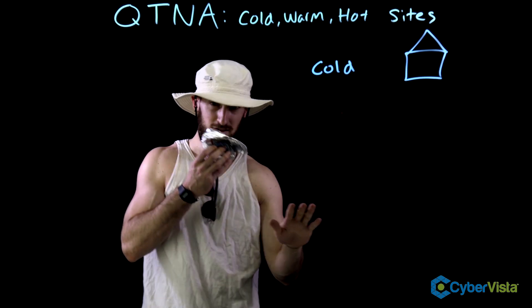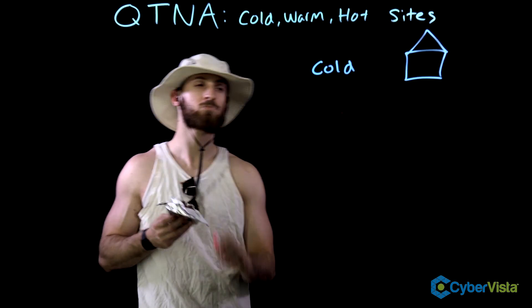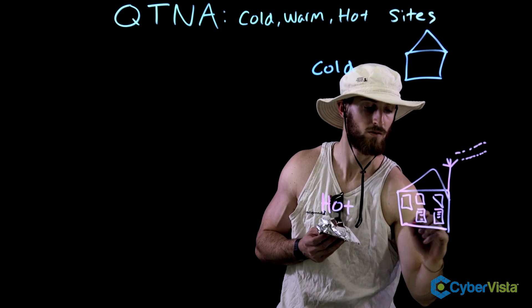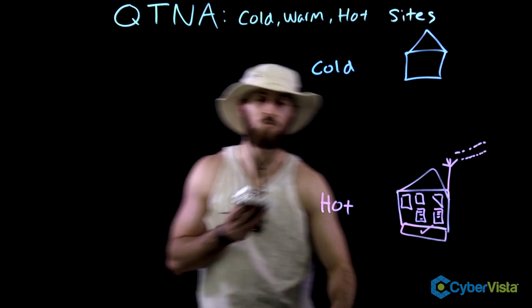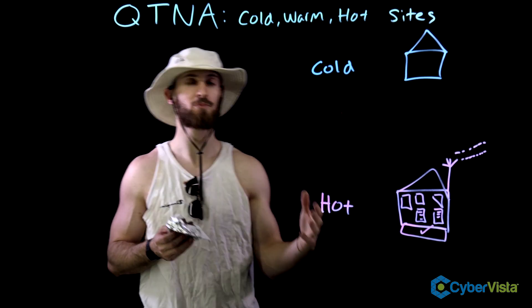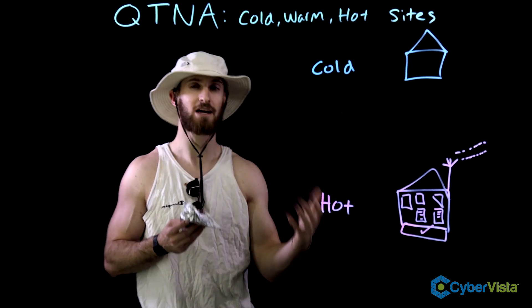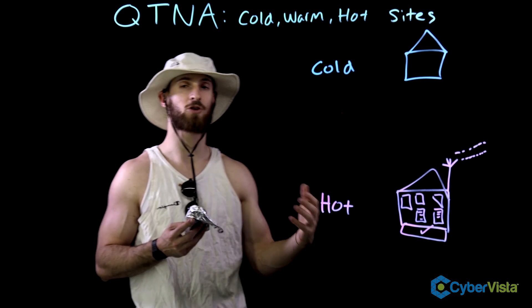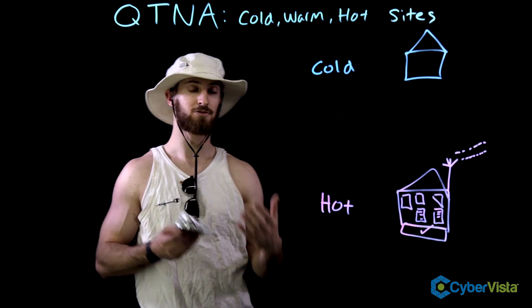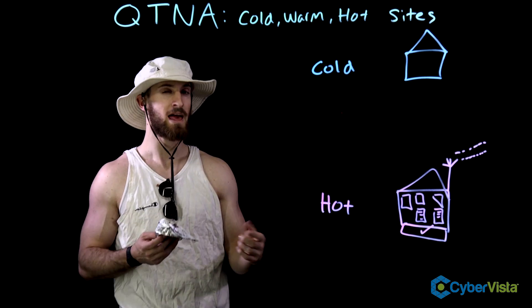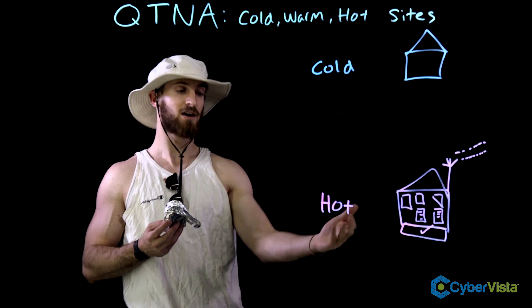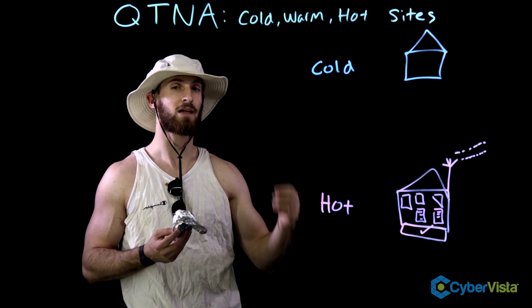A hot site is just the opposite — it basically has everything. Within your building, you have all your servers, all your databases, all your workstations, and all of your data is periodically updated within minutes or during the day. If something goes wrong with your primary facility, your redundant hot site is ready to go just like that.